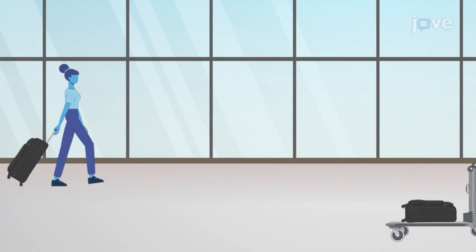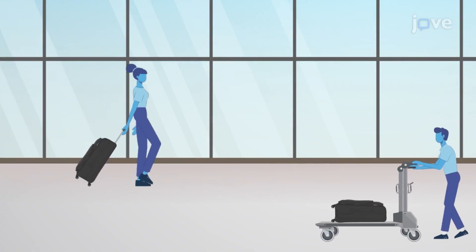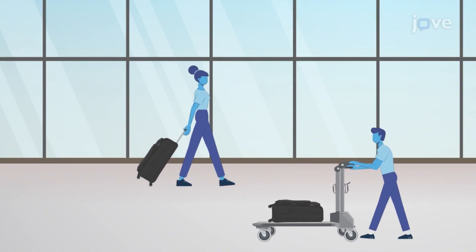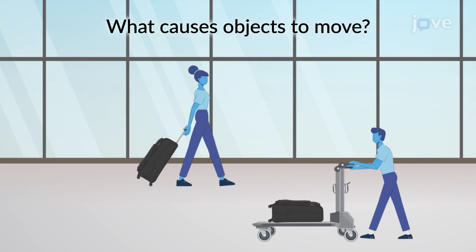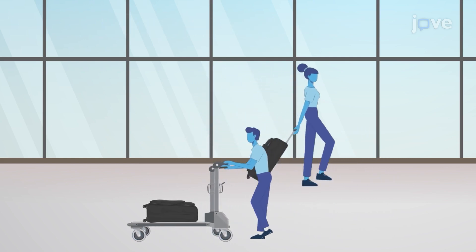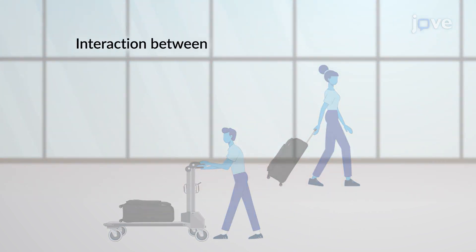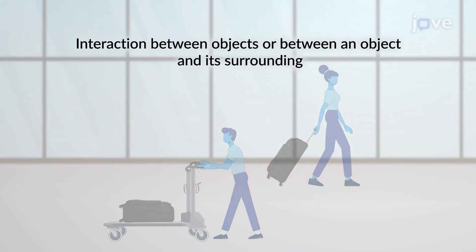We have studied the motion of objects earlier. What causes objects to move? When a push or a pull is applied to it by another object, it moves. Such an interaction between objects, or between an object and its surrounding, is called a force.